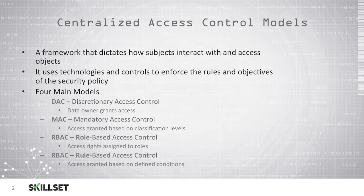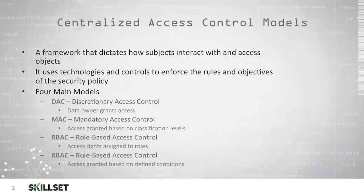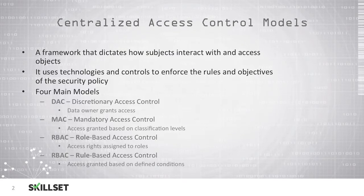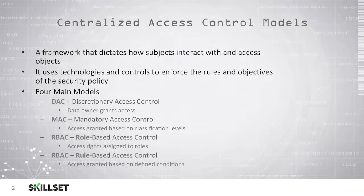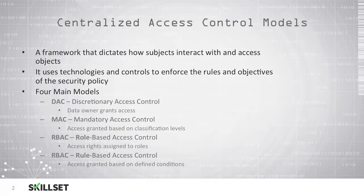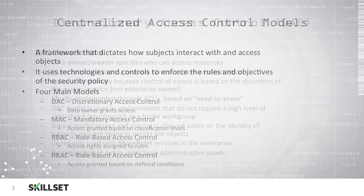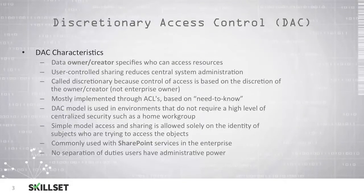There are four main models: DAC or Discretionary Access Control, where we provide the data owner with the ability to grant access to those who need it; MAC or Mandatory Access Control, which is based on classification levels; RBAC or Role-Based Access Control, which allows you to assign rights to roles; and Rule-Based Access Control, also known as RBAC, where we define access based on a set of conditions.